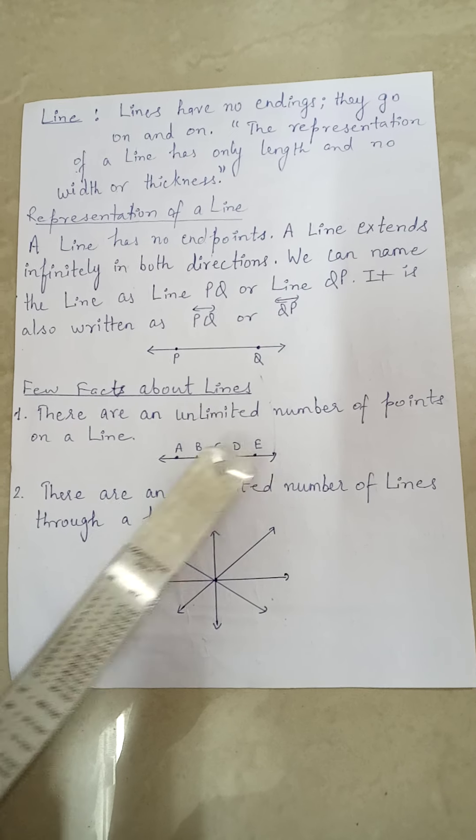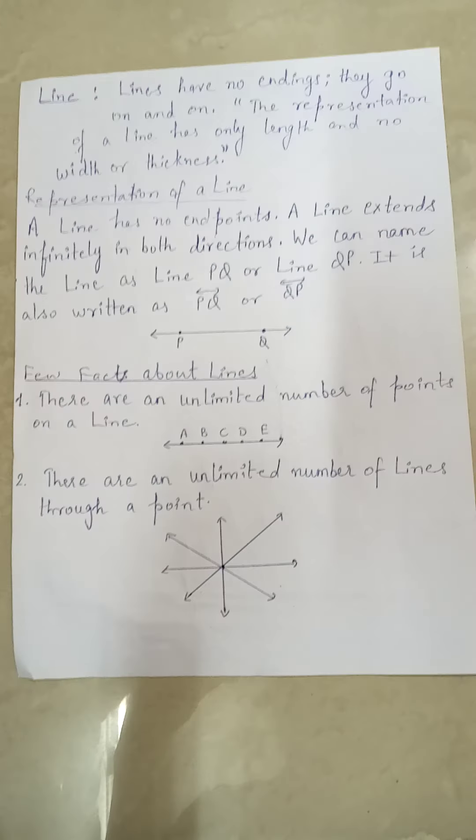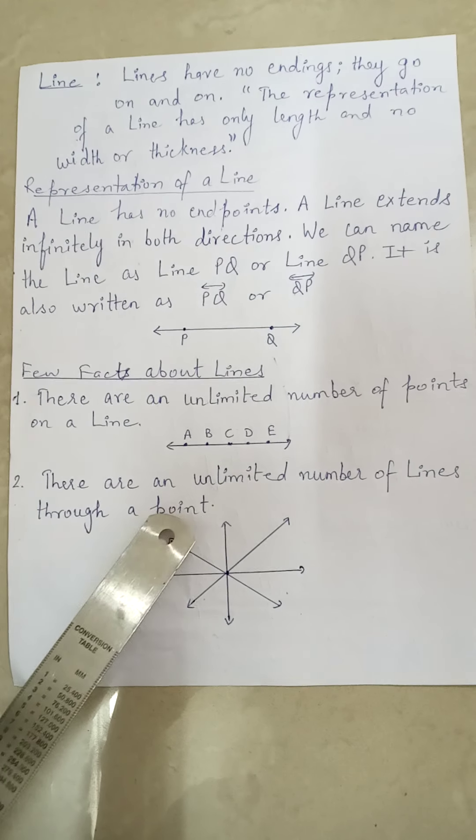...such as points A, B, Z, D, and E — all these points lie on the line. The next fact: there are an unlimited number of lines through a point. In the center there is a point, and through this point you can draw an unlimited number of lines.